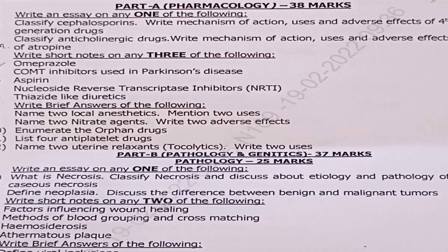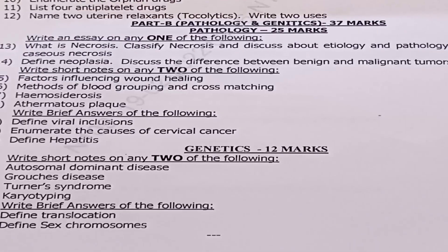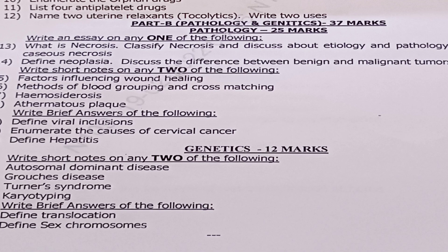Part B — Pathology and Genetics for 37 marks. Essay questions — answer one out of two, 12 marks: Question 13: what is necrosis? Classify necrosis and discuss etiology and pathology of caseous necrosis. Question 14: define neoplasia, discuss the difference between benign and malignant tumors. Short notes — answer any two of four, 2 into 5 equals 10 marks: Question 15: factors influencing wound healing. Question 16: methods of blood grouping and cross matching. Question 17: hemosiderosis. Question 18: atheromatous plaque. Brief answers — answer all three, 3 into 2 equals 6 marks: Question 19: define viral inclusions. Question 20: enumerate the causes of cervical cancer. Question 21: define hepatitis.